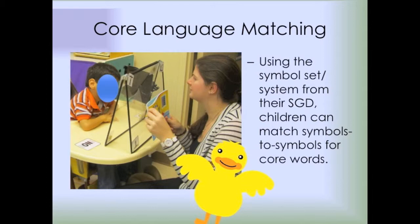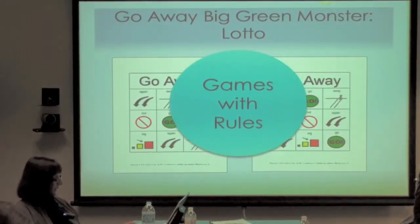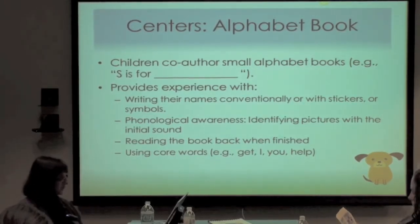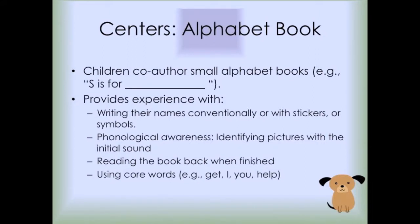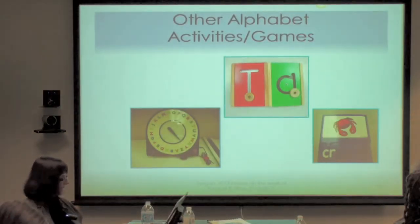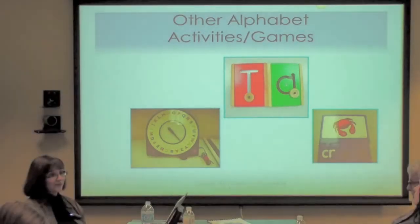Matching is where we did lotto games — not matching for matching's sake, but little lotto games that build fluency with core language retrieval. In the centers, they have an alphabet area in preschools, so they made alphabet books and we gave them lots of opportunities to use alternative pencils, as Karen Erickson would say. We have a firm rule that nobody else should put your name on anything — even if it's just a mark on paper or a stamp or a sticker, that should be your contribution. It was a nice thing for them to take home for that context of communication.